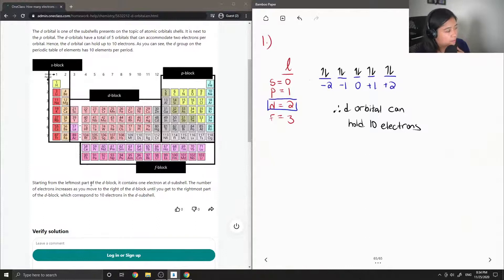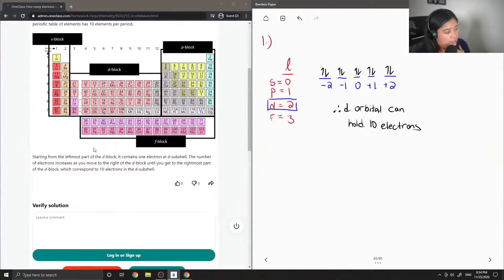Starting from the leftmost part of the d block, it contains one electron at the d subshell. The number of electrons increases as you move to the right of the d block until you get to the rightmost part of the d block, which corresponds to 10 electrons in the d subshell.